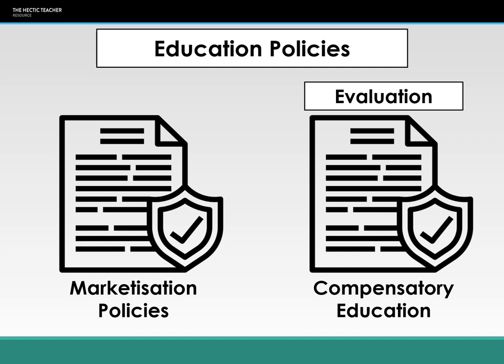Compensatory education policies — however long they continue — are a way to support working class students so they are able to achieve all that they're capable of. Overall, these internal processes can negatively impact educational achievement for the working classes because the education system is a middle class institution, built by and ultimately for the middle class. But things are changing. Whether the internal or external factors have the greater influence is ultimately for you to decide.